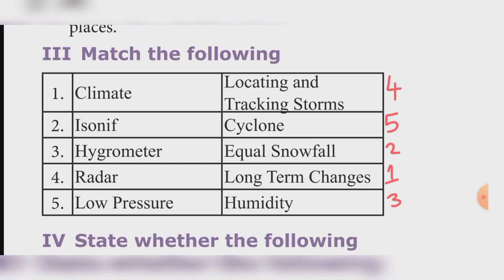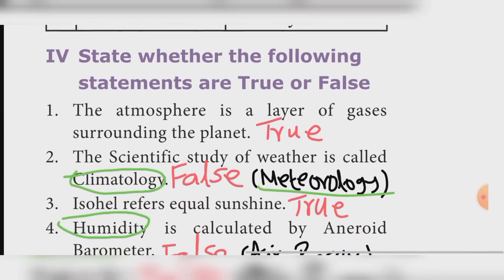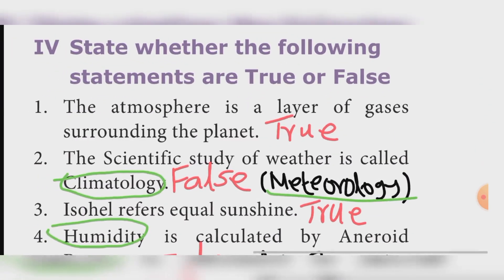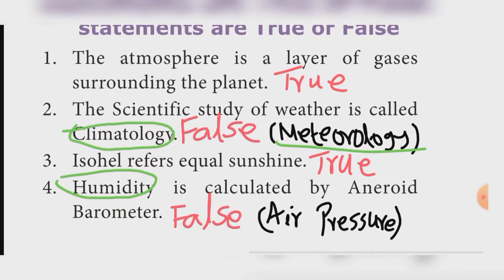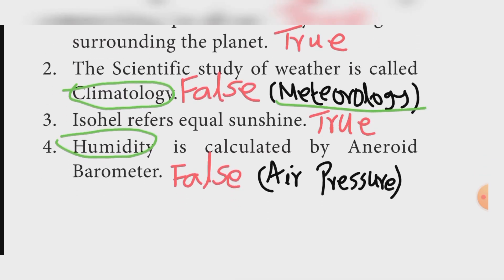State whether true or false. First: The atmosphere is a layer of gases surrounding the planet — True. Second: The scientific study of weather is called climatology — False; the correct answer is Meteorology. Third: Isohal refers to equal sunshine — True. Fourth: Atmospheric pressure is calculated by barometer — False.